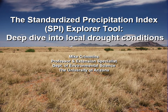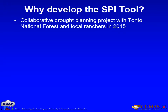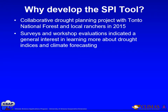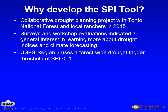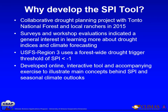This video will provide a quick overview of the Standardized Precipitation Index Explorer tool. The SPI Explorer tool emerged out of a collaborative drought planning project with the Tano National Forest in Arizona and local ranchers in 2015. Surveys and workshop evaluations within the project indicated a general interest in learning more about indices and climate forecasting.